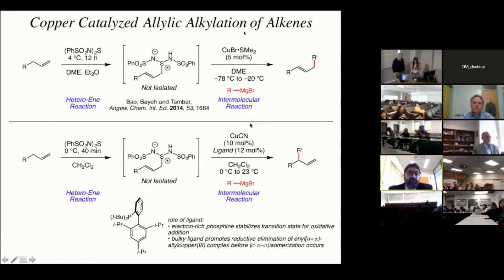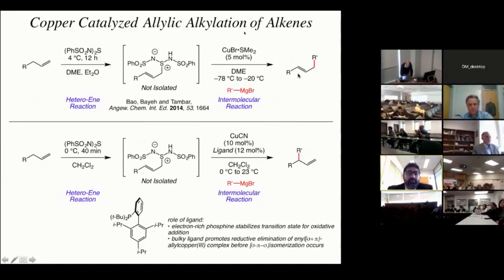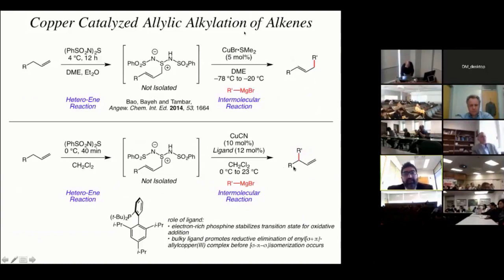We learned that copper chemistry works really well. So now we can take terminal alkenes, perform the ene reaction, and without isolating the ene adduct, subject it to copper catalysis in the presence of various Grignard reagents to generate the allylic alkylation product — the linear product with the internal double bond with high E-selectivity. By changing the reaction conditions, specifically the copper source, the ligand using Buchwald-type ligands, and importantly also the solvent and temperature, we were able to switch the selectivity to generate the branched product with high branch-to-linear selectivity.